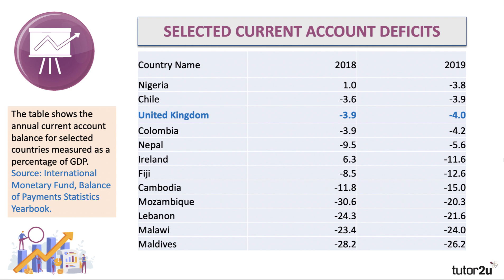Here's some of the data that we looked at in the previous video. The reason for selecting these countries is that they're all running current account deficits in 2019 — that's the deficit in trading goods and services, primary and secondary income. The UK runs a deficit of around 4% of their GDP, similar to countries such as Colombia, Chile and Nigeria. But there are countries, notably at the bottom of the table, that are running huge current account deficits, well in excess of 10% of their national income.